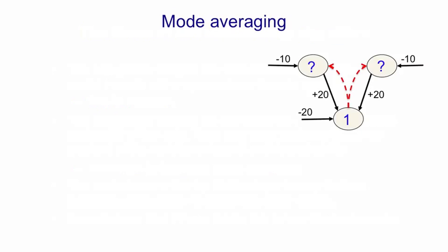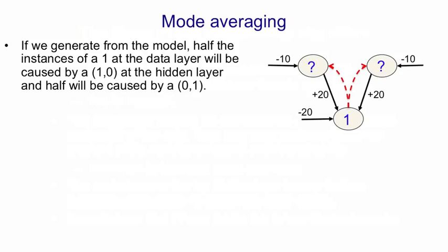Now let me explain mode averaging using the little model with the earthquake and the truck that we saw before. Suppose we run the sleep phase and generate data from this model. Most of the time, those top two units will be off because they're very unlikely to turn on under their prior, and because they're off, the visible unit will be firmly off because of its bias of minus 20. Just occasionally — about one time in e to the minus 10 — one of the two top units will turn on, and it'll be equally often the left one and the right one. When that unit turns on, there's a probability of a half that the visible unit will turn on. So on the occasions when the visible unit turns on, half have the left-hand hidden unit on, the other half have the right-hand hidden unit on, and almost none have neither or both units on.